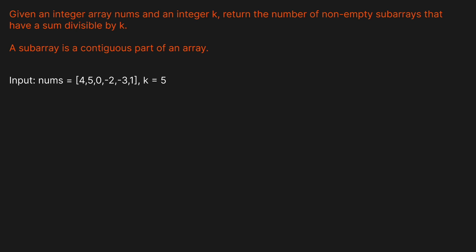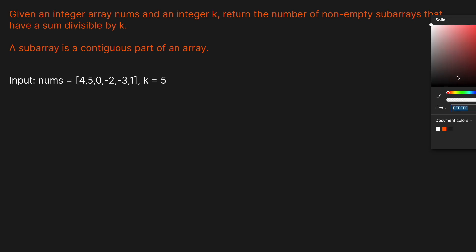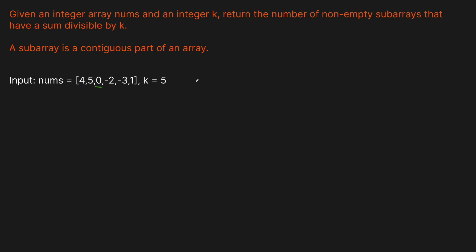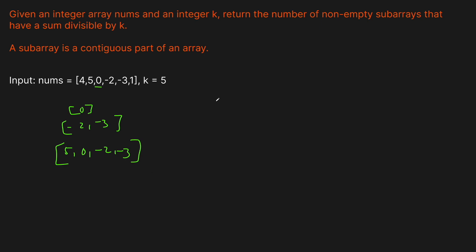A subarray is a contiguous part of an array. Let's look at an example where nums = [4, 5, 0, -2, -3, 1] and K = 5. We want to find subarrays whose sum is divisible by five — a multiple of five. For instance, zero is a multiple of five because 0 × 5 = 0. We could also have -2 and -3, which sum to -5, or 5, 0, -2, -3, which sums to zero — also a multiple of five.